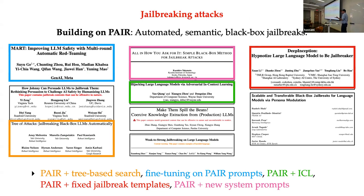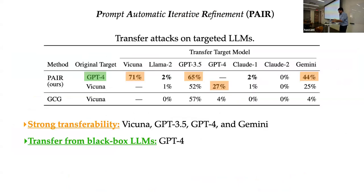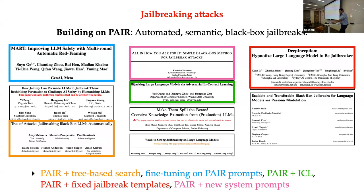Regarding transferability: GCG requires access to the model, so you cannot run GCG directly on ChatGPT. What you do is run it on LLaMA because LLaMA is open-box, and then use the exact jailbreak artifacts — the exact strings — as prompts for ChatGPT. That's called transfer. You could do the same thing for PAIR. Since we published PAIR, there have been a lot of follow-up works to use PAIR to fine-tune models and to make PAIR more complex to get better results in terms of jailbreaking efficiency.